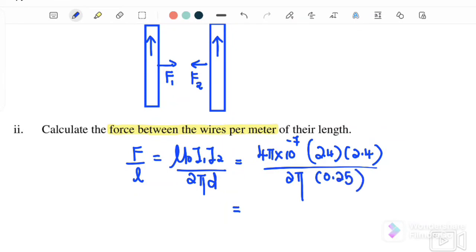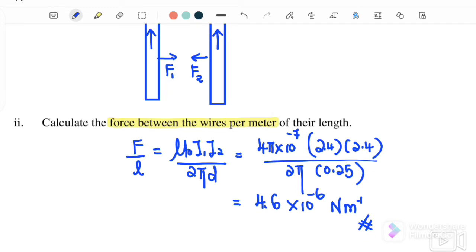Therefore, the force per unit length is equal to 4.6 times 10 to the negative 6, and the unit is newton per meter because it's force per length.